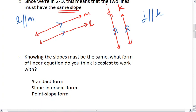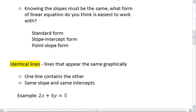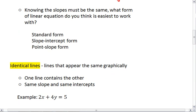Knowing that parallel lines have the same slopes is really important. And based on that information, what form of linear equation do you think is easiest to work with? The standard form, the slope-intercept form, or the point-slope form? Take a moment and think about it, and then resume the video.